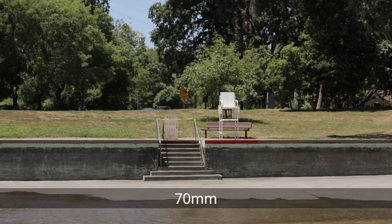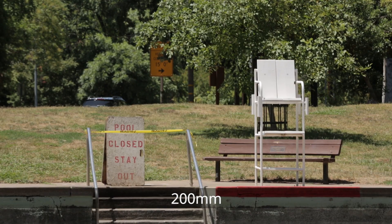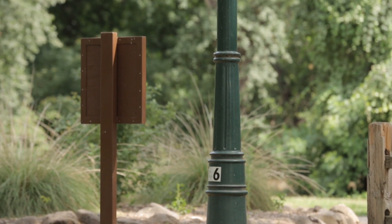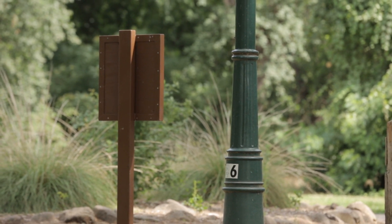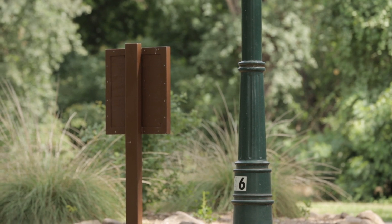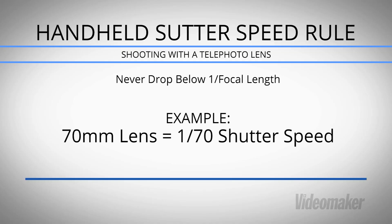With telephoto lenses, the longer the focal length, the narrower the field of view and the greater the magnification — they capture a very narrow crop of the world. They require a much shorter shutter speed to avoid motion blur from camera shake. It's best to use handheld shutter speed rules, which state that your shutter speed should never drop below one over your focal length. For example, if you're shooting a 70mm lens on a full-frame camera, your shutter speed should not be less than 1/70th of a second.